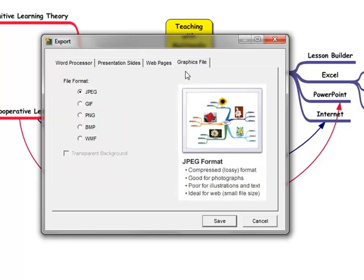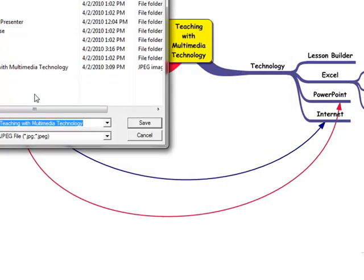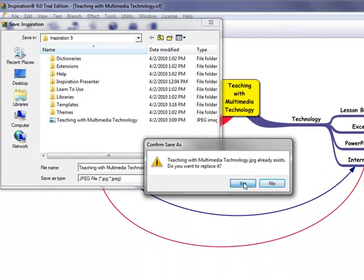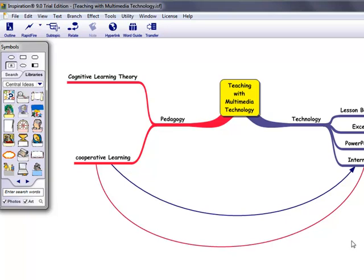Or now if I click the graphics file, there are different file formats for the image. So I just choose the JPEG file, then I click save. Then again, I find a proper folder, and I click save. And now I overwrite my original one.